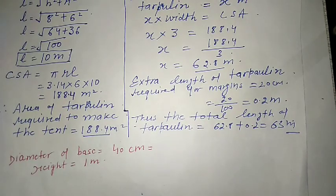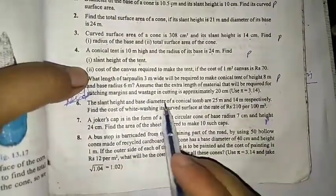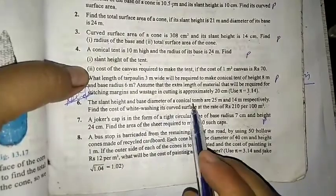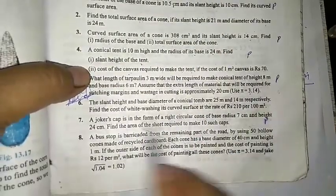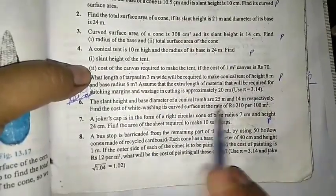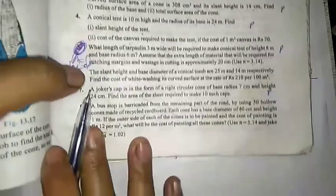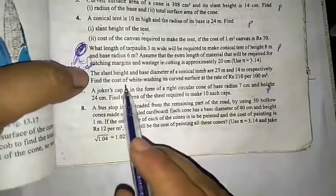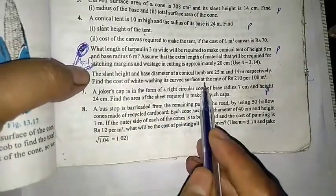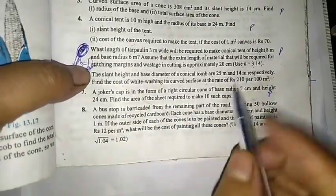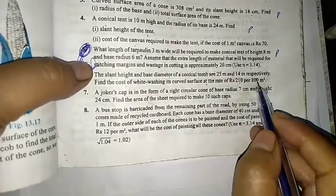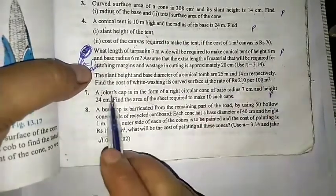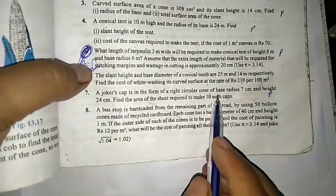Question 6: The slant height and base of a conical tomb are given. We find the CSA, then multiply by 210 and divide by 100 to get the cost of whitewashing. We can solve this similarly.